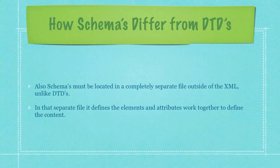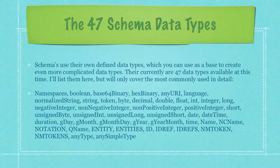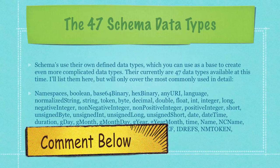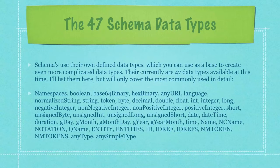In that separate file, it defines how the elements and attributes work together to define the content. Schemas use their own defined data types, which you can use as a base to create even more complicated data types. There are currently 47 data types available.